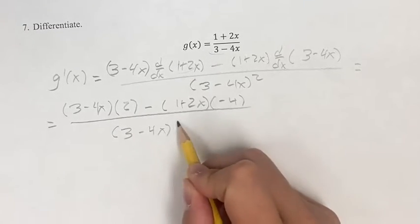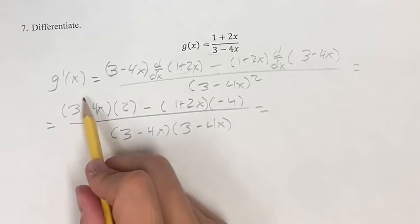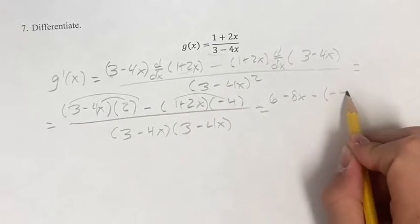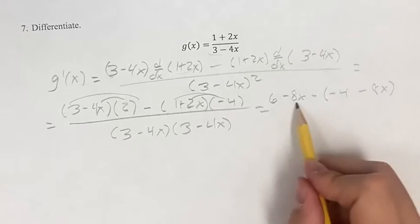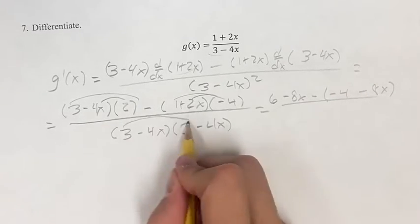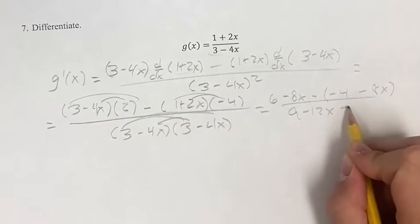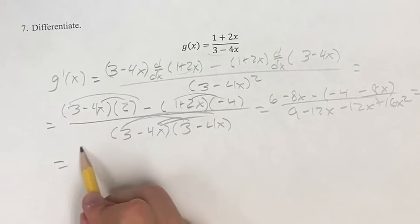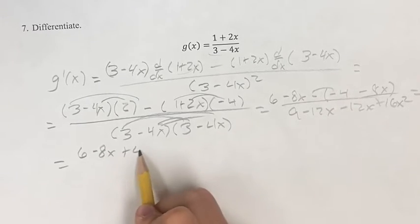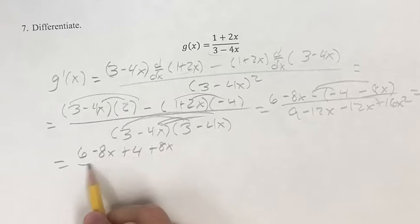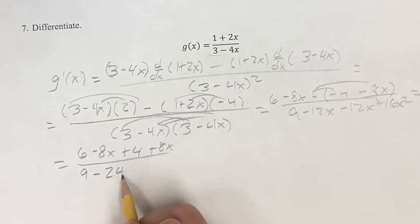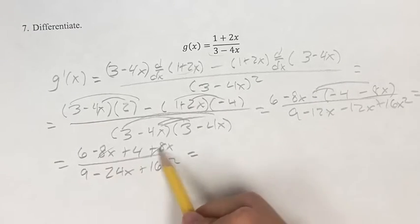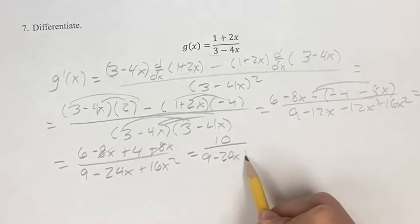Let's expand that. Distributing gives us 6 minus 8x minus negative 4 minus 8x, over 9 minus 12x minus 12x plus 16x squared. Continuing on, we get 6 minus 8x plus 4 plus 8x over 9 minus 24x plus 16x squared. With the x terms canceling out, this equals 10 over 9 minus 24x plus 16x squared.